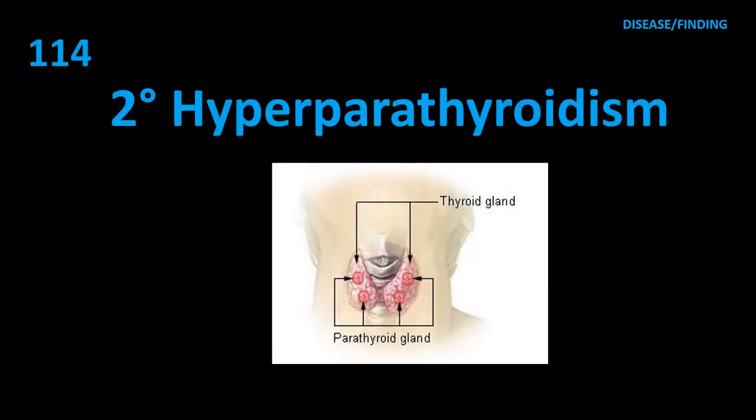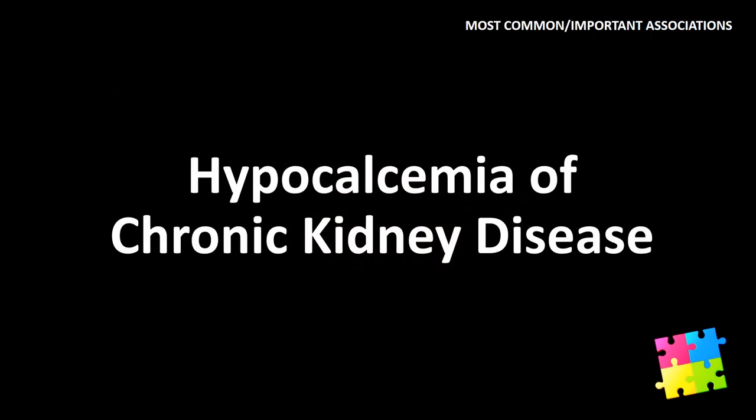Item 114: Secondary hyperparathyroidism — hypocalcemia of chronic kidney disease.